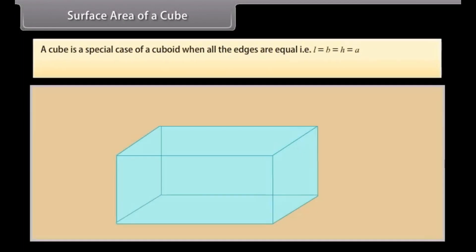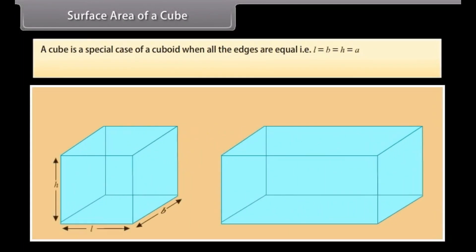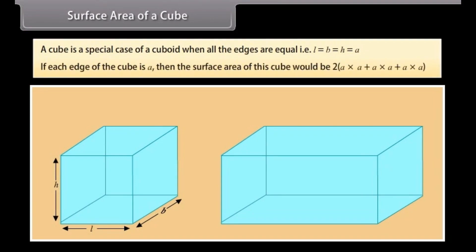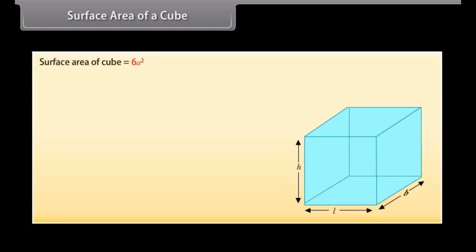Surface area of a cube. A cube is a special case of a cuboid when all the edges are equal, that is L = B = H. If each edge of the cube is A, then the surface area of the cube would be 2(A×A + A×A + A×A), or we can write it as 6A².